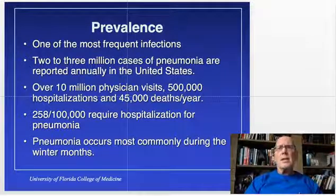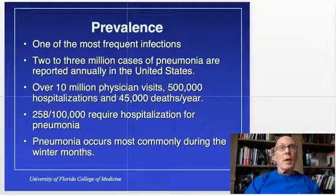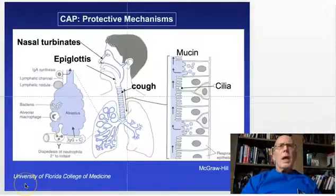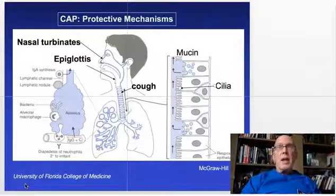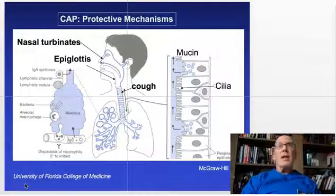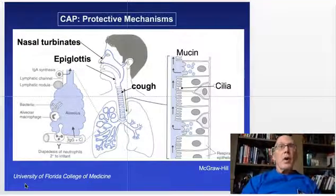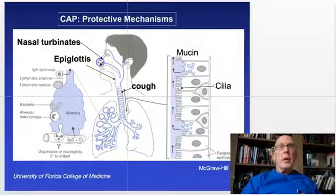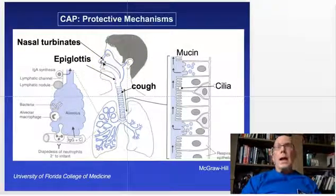This infection tends to be seasonal, occurring most frequently in the winter months. In order to survive, humans possess a number of mechanisms to prevent bacteria and viruses from entering the lung. First are the nasal turbinates, which contain mucus and hairs that trap particles.